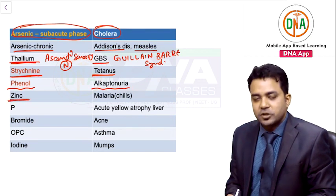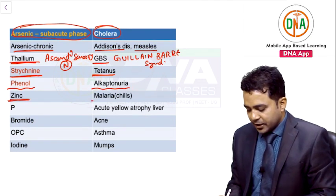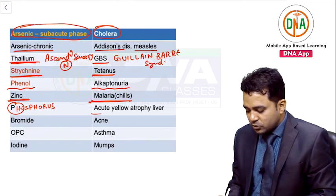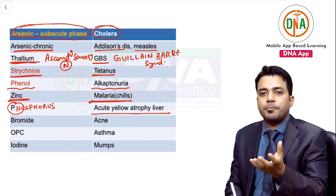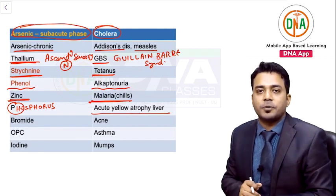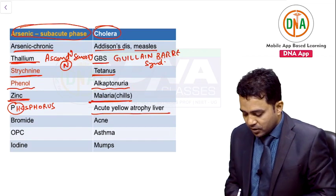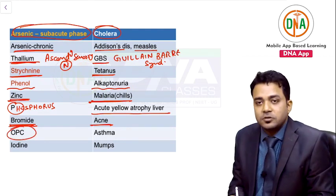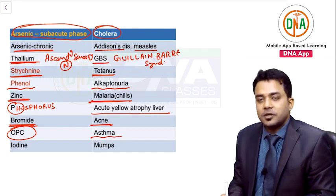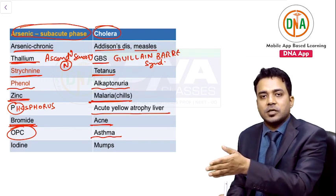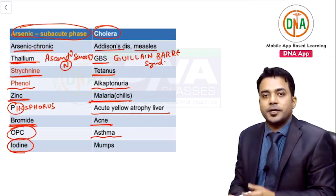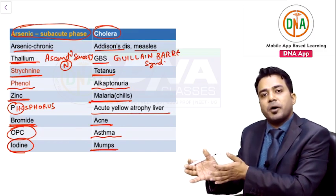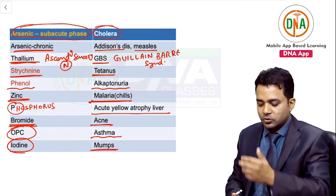Zinc poisoning resembles chills and rigors of malaria. Phosphorus is a cause of acute yellow atrophy of liver — hepatic encephalopathy. Bromide poisoning can lead to a picture of acne. Organophosphorus compounds, by causing bronchoconstriction, resemble asthmatic symptoms. Iodine poisoning causes painful parotid swelling — the main sign of mumps — so iodine poisoning resembles mumps.